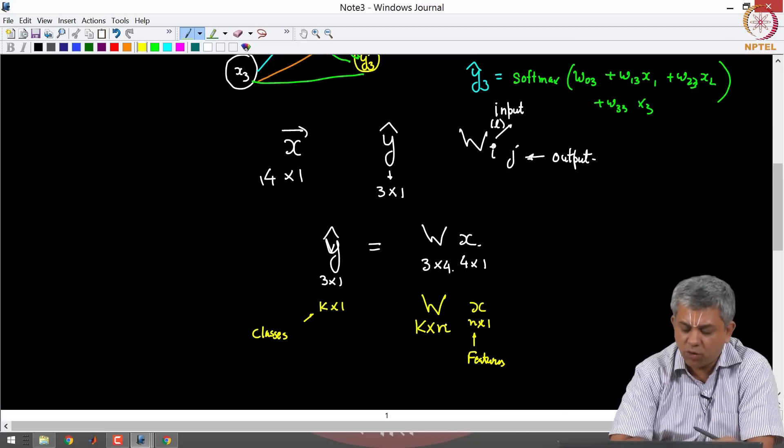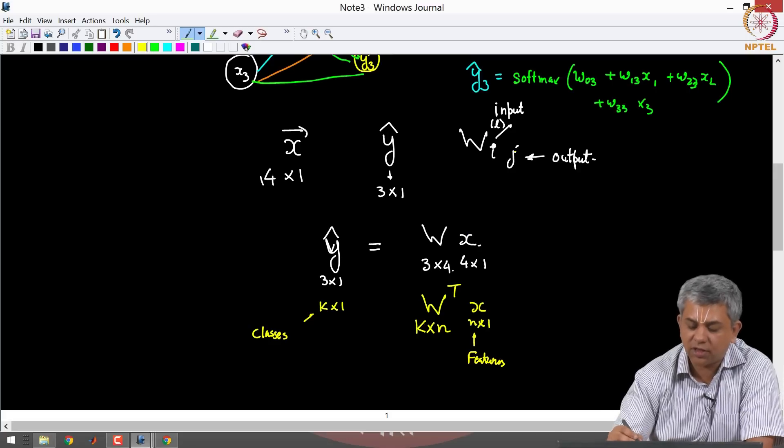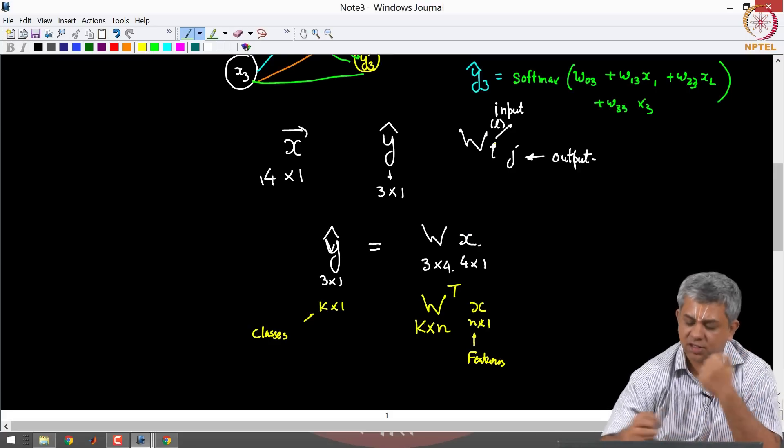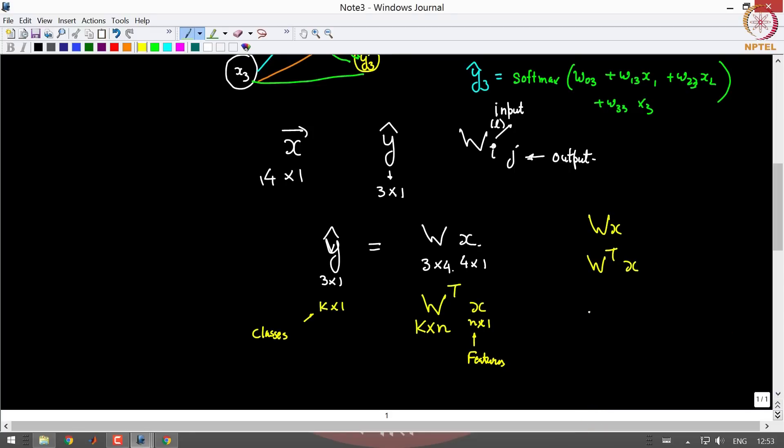Now there are some people who will denote this W as W transpose so as to be consistent with the notation I have used here. So you might see this at multiple places. Sometimes you will see WX, sometimes you will see W transpose X, sometimes you will also see W transpose X plus B, where B is a vector, the vector of biases.